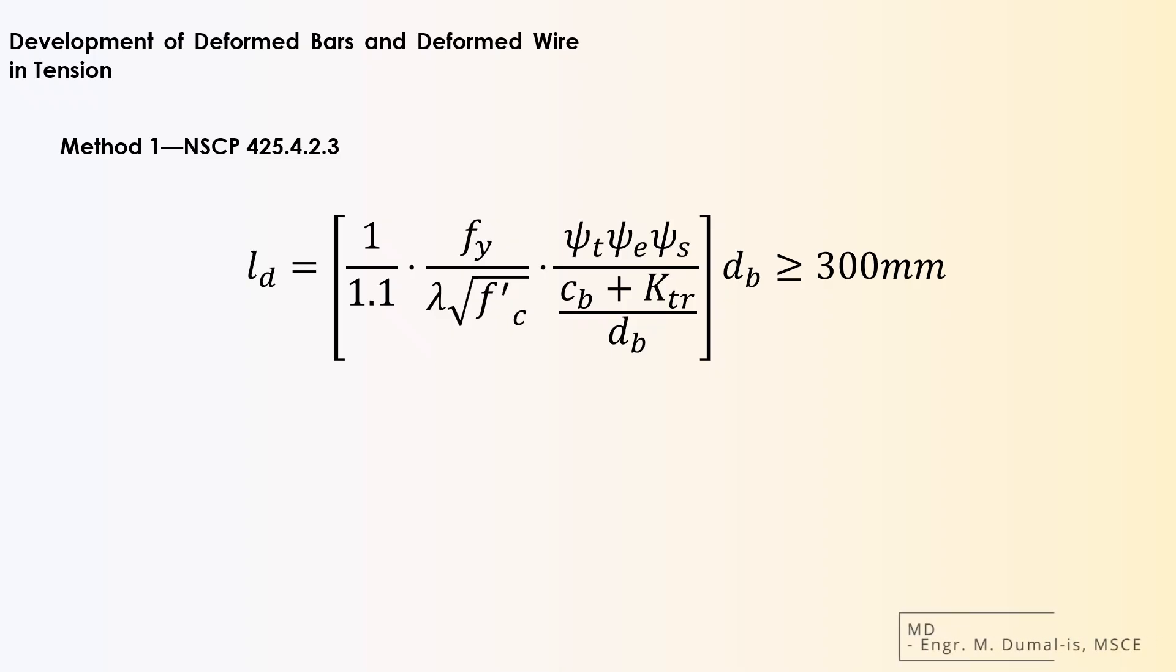Notice that the value of length is directly proportional to the diameter of the rebar, dB, multiplied by different factors. And the value of the length is expected to be equal or greater than 300 millimeters. Let us discuss the different factors.